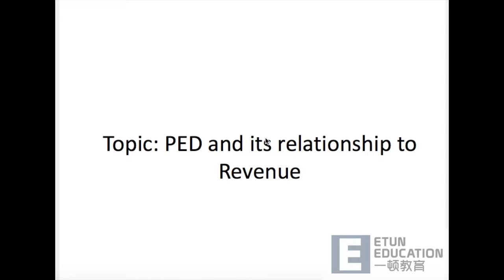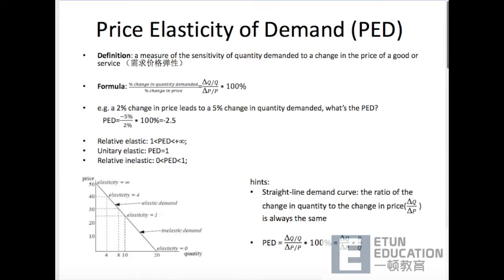今天我们要来看的知识点是PED，还有它和revenue之间的关系。这也是每年必定会出现的考点之一。So first of all, what is PED? 它的全名是Price Elasticity of Demand. Here is the definition: It's a measure of the sensitivity of quantity demanded to a change in the price of a good or service. 中文名是需求价格弹性。